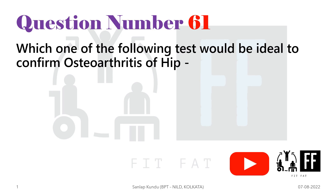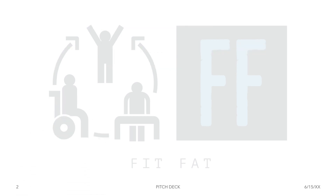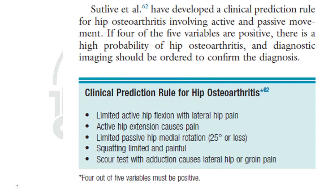Question number 61: which one of the following tests would be ideal to confirm osteoarthritis of the hip joint? To diagnose hip osteoarthritis, Sital et al. developed a clinical prediction rule with specific variables.